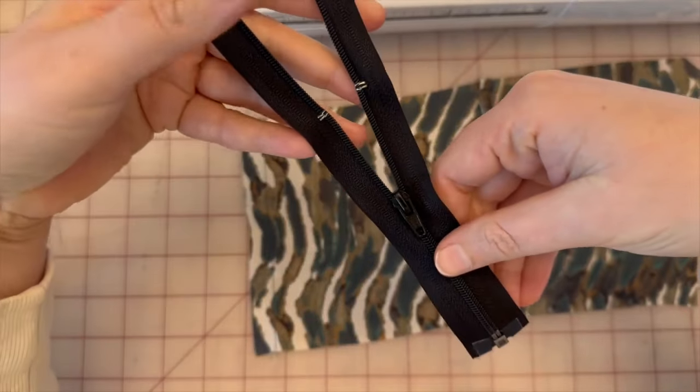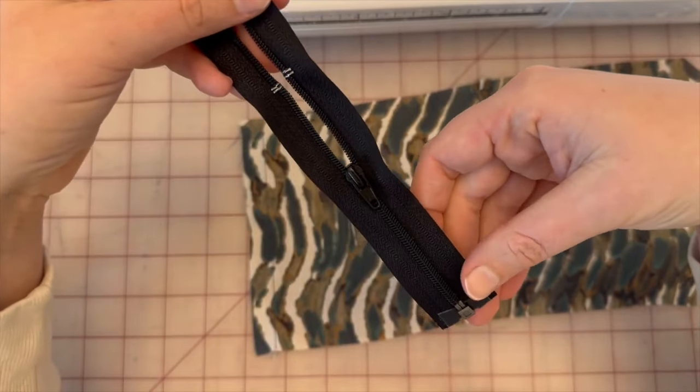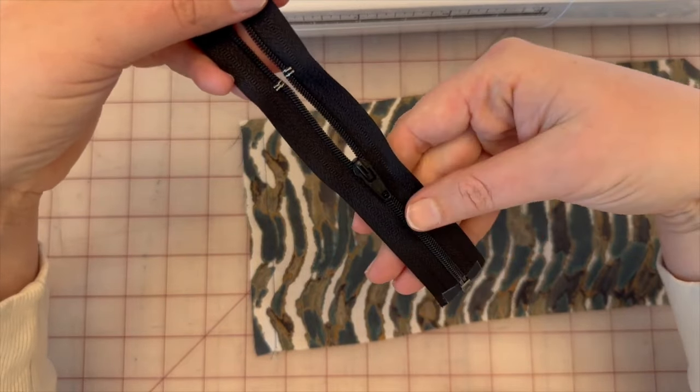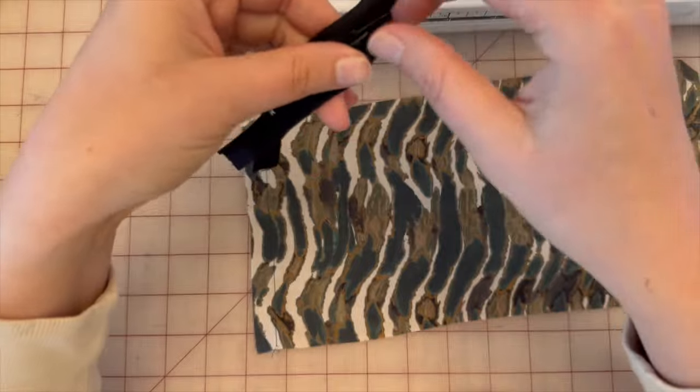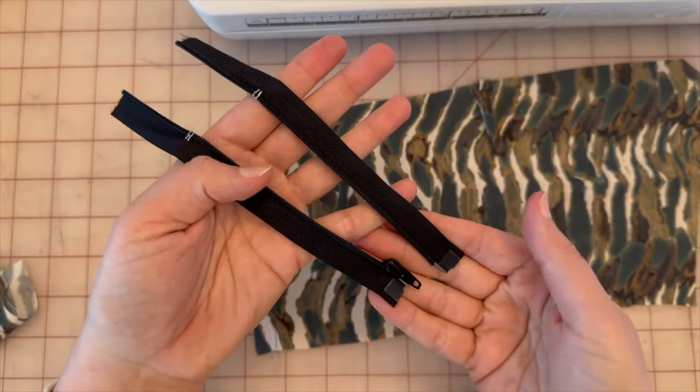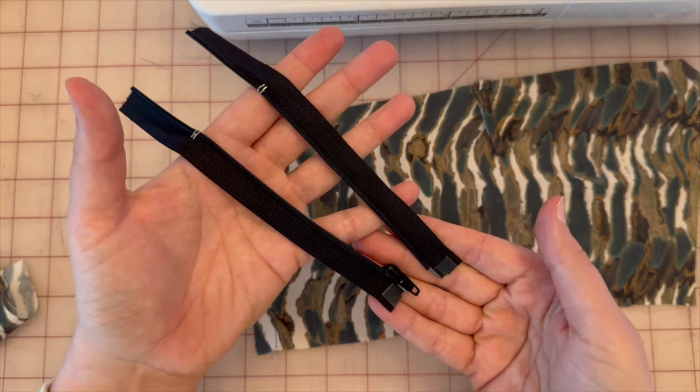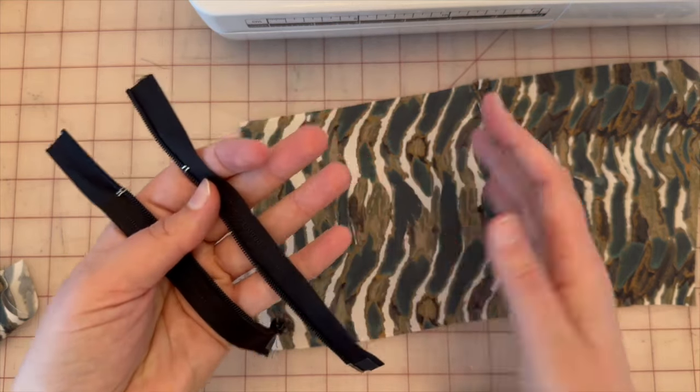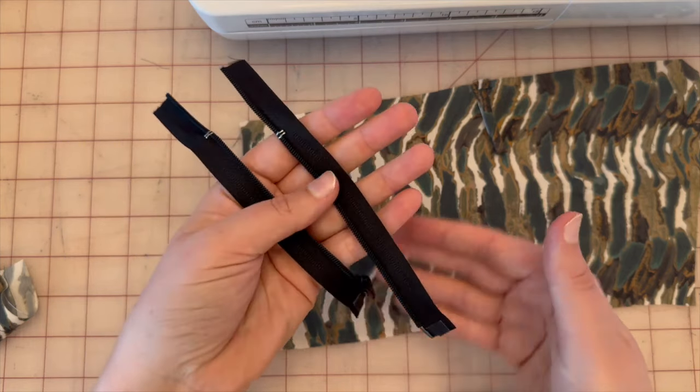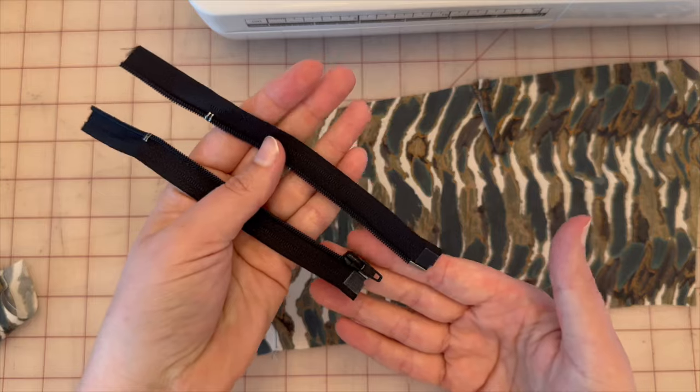That's also an option. I don't have those tools in my house, so for me it was just way more convenient to pay a couple extra dollars to get it resized. And so this is a five inch separating zipper. As you can see, they completely separate at the bottom. And then we're going to attach one side to one back panel and the other side to the other back panel.